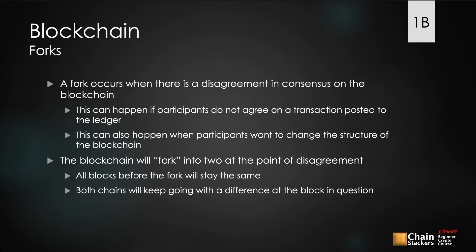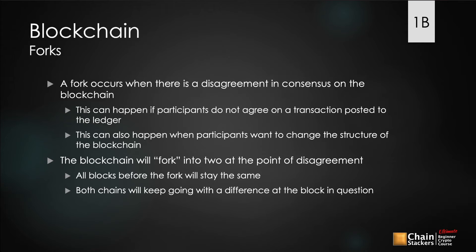A fork can also happen when participants want to change the structure of the blockchain. There are a lot of different protocols and what they call improvement protocols that go on within the network. As long as you have consensus of people that want to make this network change, you can have a fork that splits into a different blockchain and continues the chain with these new improvement protocols in place.